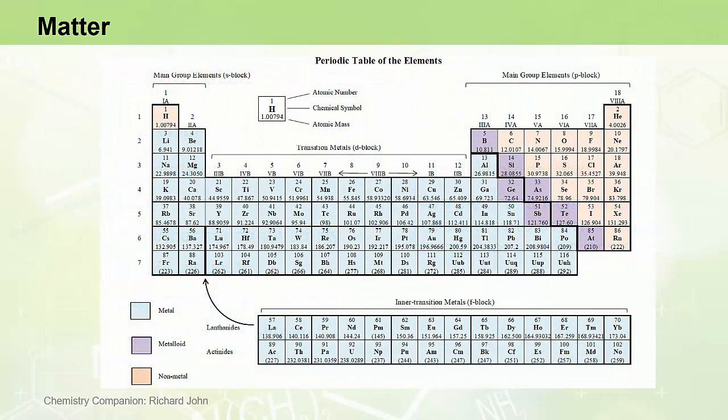The elements that lie near the diagonal line are called the metalloids, and the metalloids share some physical and chemical properties with metals and some physical and chemical properties of non-metals.